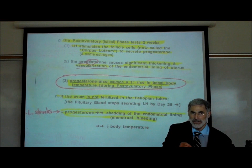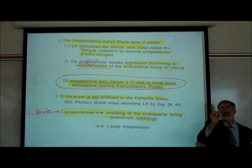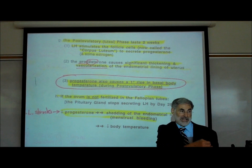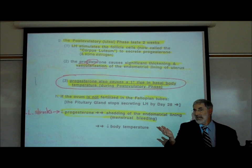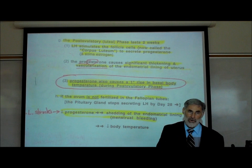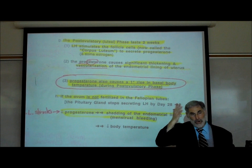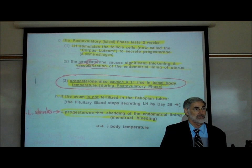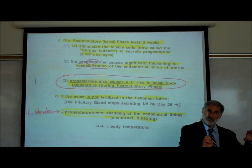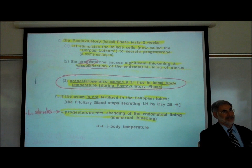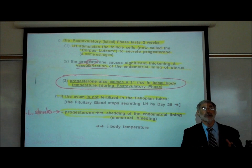Before ovulation test kits existed, women used body temperature to know when they could get pregnant — this is called the rhythm method. A woman takes her temperature every morning before getting out of bed, writes it down, and eventually one morning it will be about one degree higher. That means she is now releasing progesterone — she's in the post-ovulatory phase and can now get pregnant. Temperature stays elevated until about day 28.